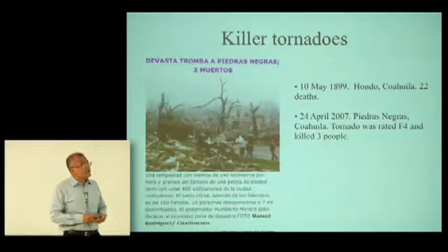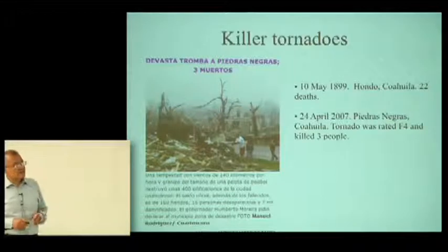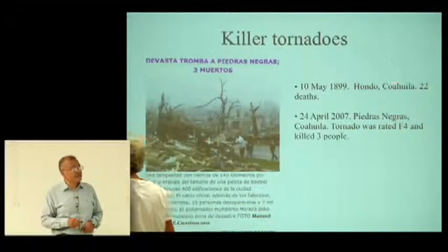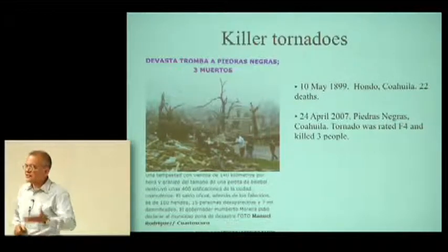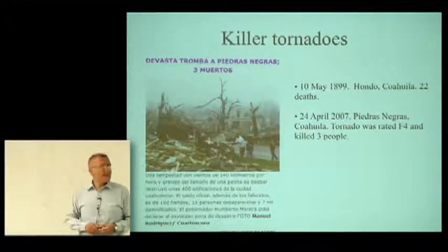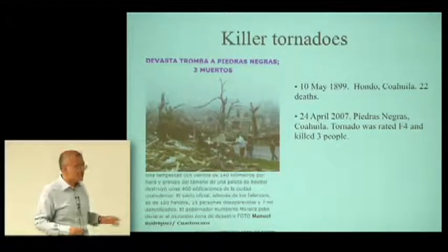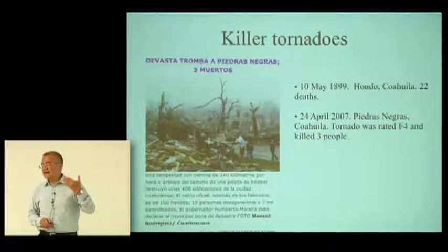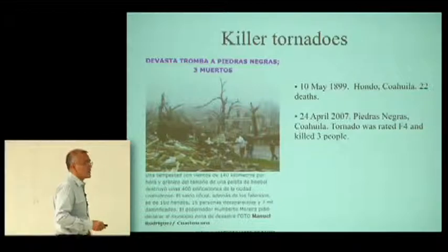Regarding killer tornadoes: the highest number of victims that can be directly attributed to a tornado occurred in 1899 in Coahuila — which is on the border with the United States, the southern extension of the Great Plains — where 22 miners were killed. The second most deadly is a very recent, very well documented event with measurements and full analysis: it killed three people on the Mexican side and five or six in Eagle Pass on the US side.